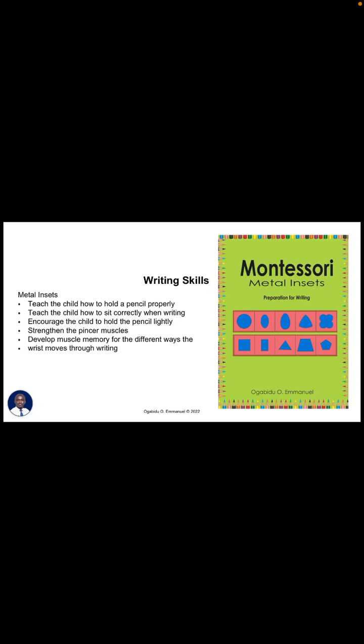For materials to prepare children for writing, this is where we have the direct preparation. The first material is the metal inset, which has 10 shapes — the frame and the insets. The metal inset teaches the child how to hold a pencil properly, how to sit correctly when writing, encourages holding the pencil lightly, strengthens the pincer muscles, and develops muscular memory for the different ways the wrists move when writing. The shapes have different curves and patterns which are all found in the letters of the alphabet.